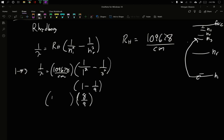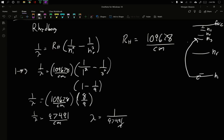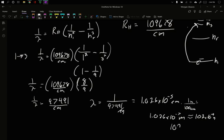8 ninths times 109,678 per centimeter is going to equal 1 over lambda. This is going to be 1 over lambda is 97,491. Rearrange. My lambda is going to equal 1 over 97,491 per centimeter, which we'll move the centimeter up, which is 1.026 times 10 to the minus 5 centimeters. And remember that there's 100 centimeters in every 1 meter. So this is 1.026 times 10 to the minus 7 meters, or approximately 102 times 10 to the minus 9 meters, which is 102 nanometers.